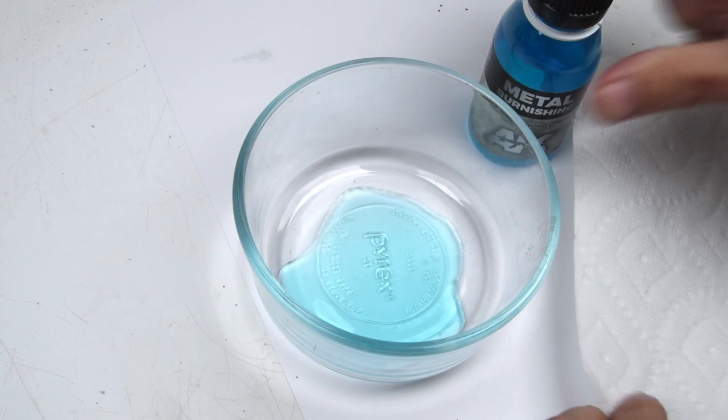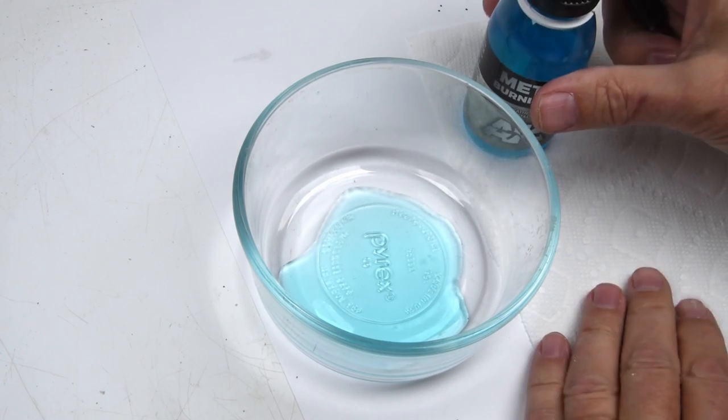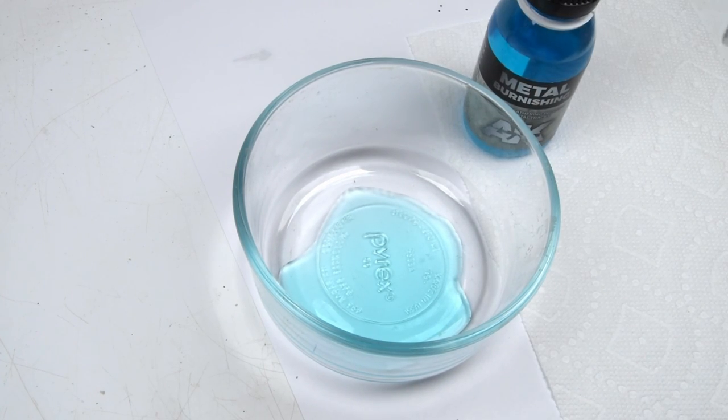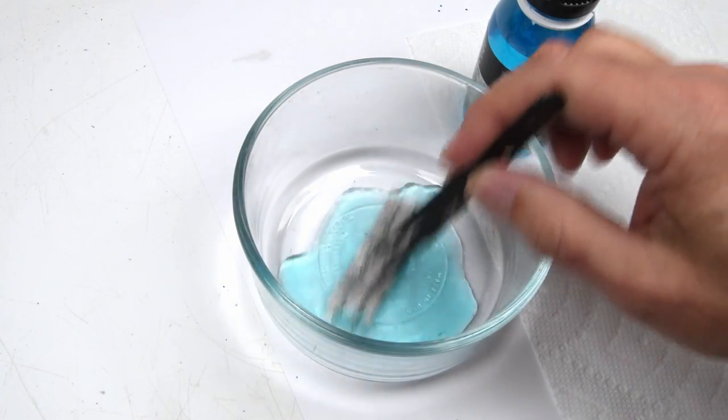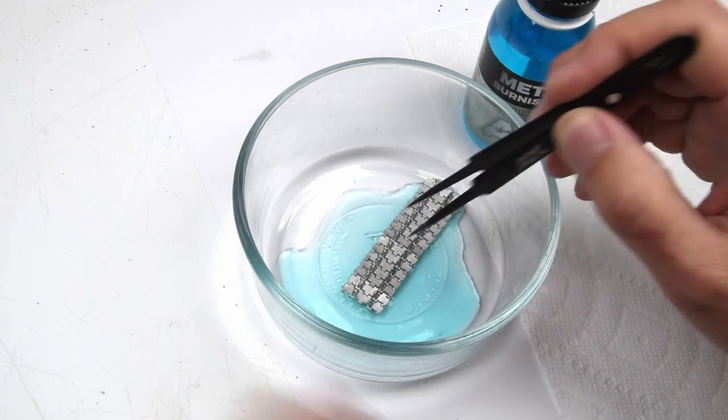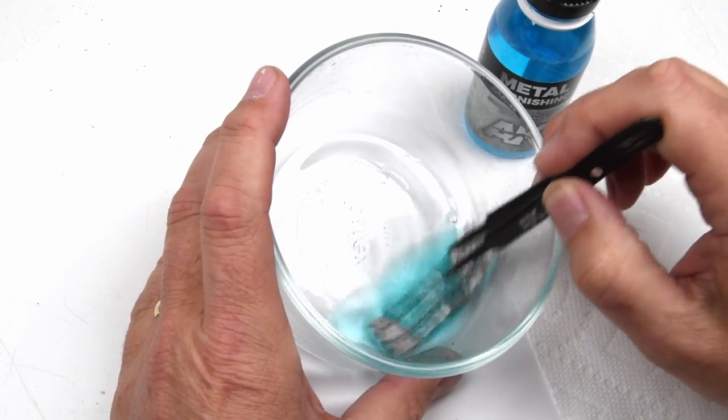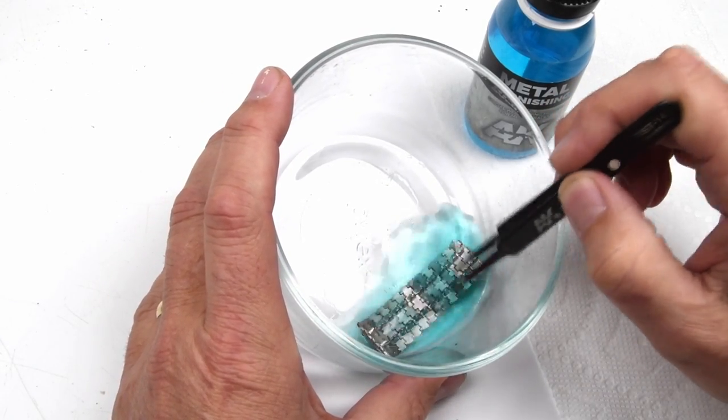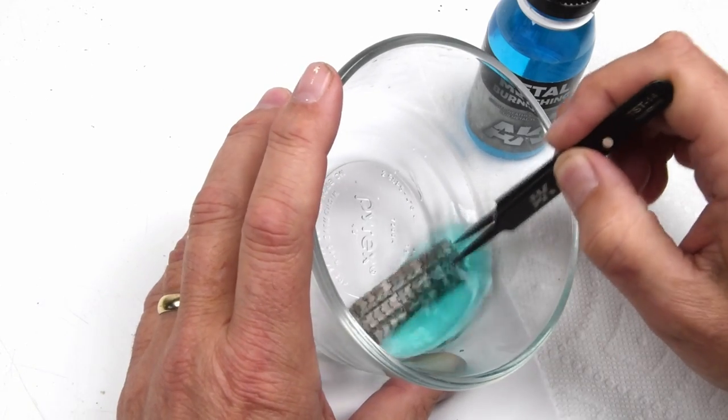I use a glass bowl and I do prefer a glass bowl, and pour some of the solution in there and then simply drop in the tracks. Now the trick here, and there really is only one trick, is just to make sure that it's fully submerged into the solution. That's it. That's all we need to do.